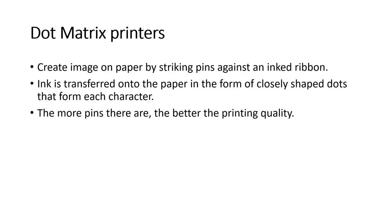The first type of printers we discuss are dot matrix printers. This type of printer produces images on paper by striking pins against an ink ribbon. The ink is transferred onto the paper in the form of closely spaced dots that form each character. The more pins there are, the better the print quality. Commonly, 24-pin dot matrix printers were in use, which could print almost all characters clearly.